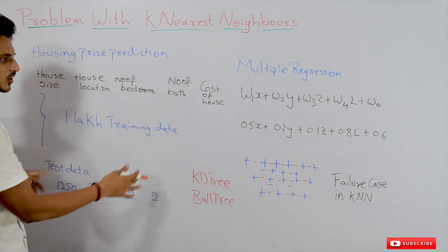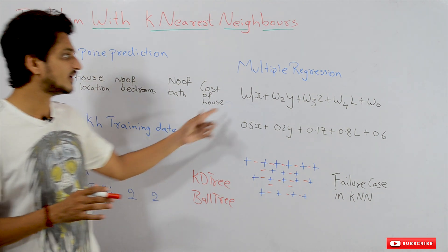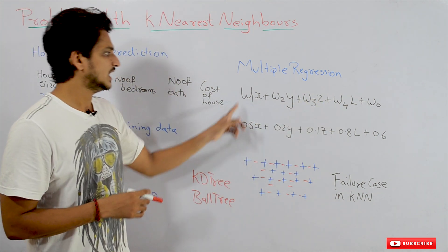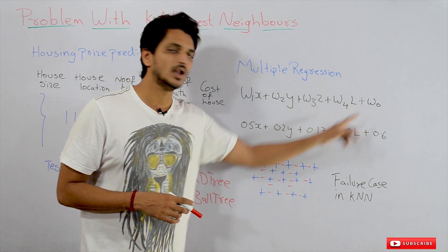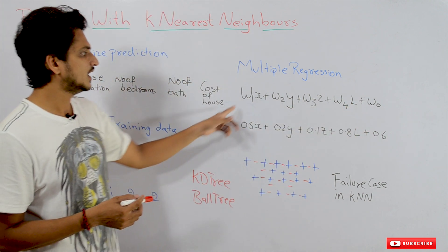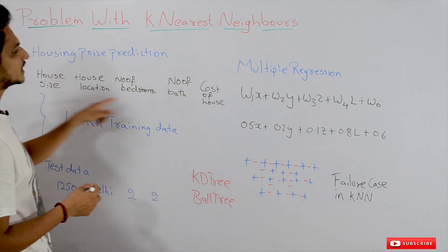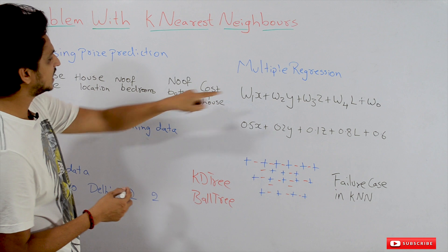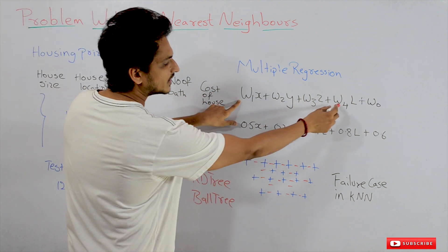If you apply a multiple regression model on this dataset, the model will identify an equation like this: w1x + w2y + w3z + w4l + w0. Here, x is housing size, y is housing location, z is number of bedrooms, l is number of bathrooms.